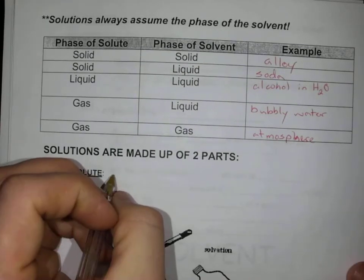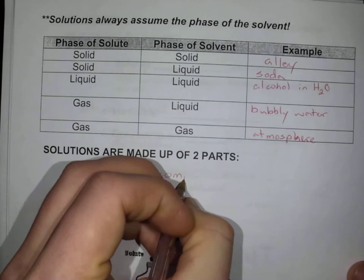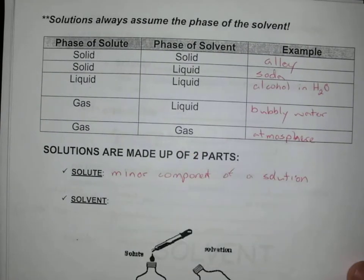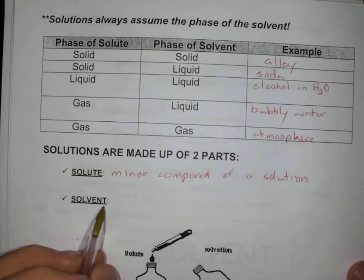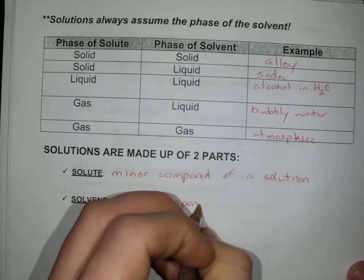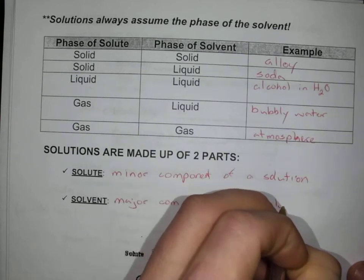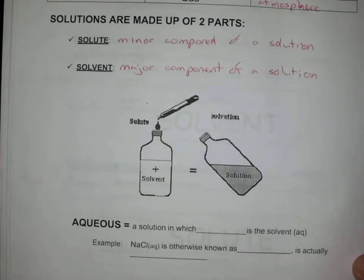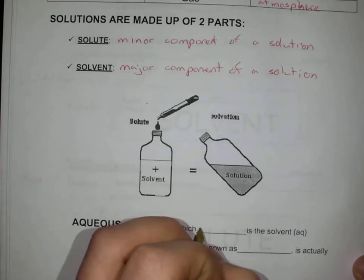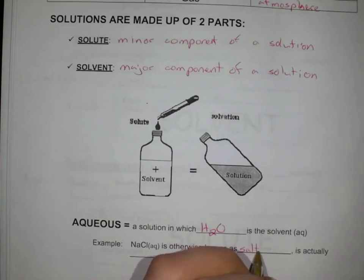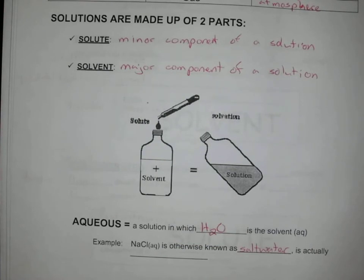So let's talk about what's called our solute and solvent. A solute is the minor component of a solution — it's smaller. You'll notice that 'solute' has fewer letters than 'solvent,' which can help you remember. Our solvent is the major component. Most often in here, we're going to be talking about aqueous solutions, where water — H₂O — is the solvent. For example, NaCl aqueous would be table salt dissolved in water, making salt water.